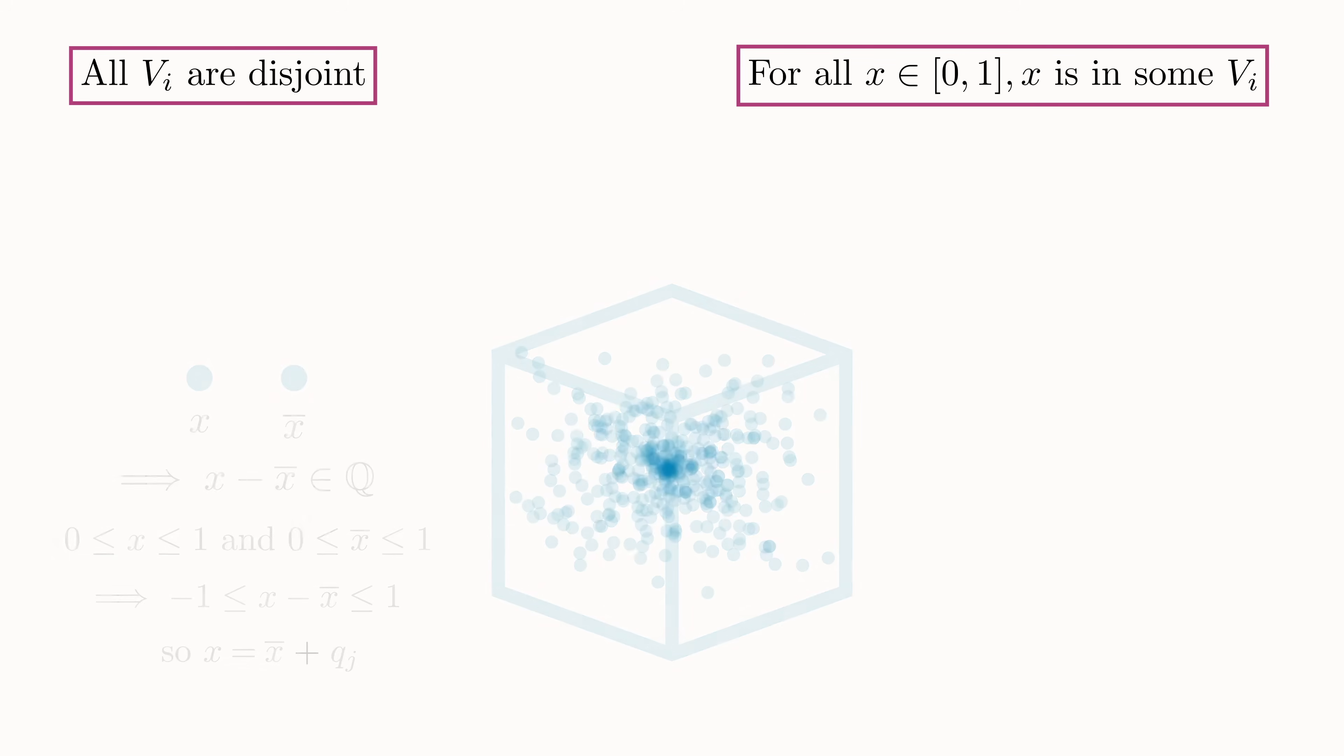With these two results in hand, we are now ready to show that V is non-measurable. The next step we take is to combine all the translated copies of V. So we take the union of all the VIs from I equals one to infinity. Since we only shifted V with rationals from minus one to one, then the entire union must be contained in the interval minus one to two.